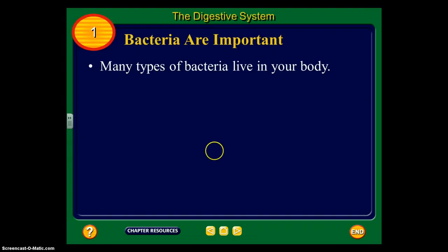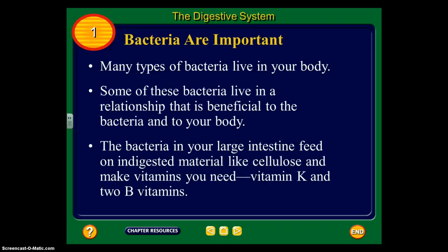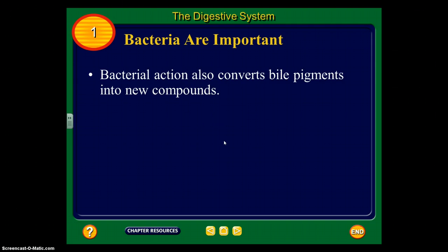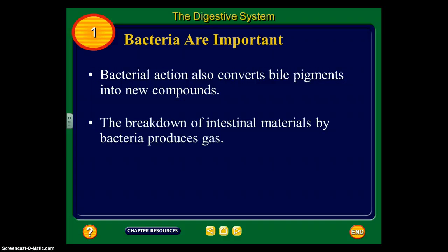Last but not least, there are many types of bacteria that live in our digestive system. Some live in a relationship that is beneficial to both the bacteria and our bodies. Bacteria in our large intestine feed on undigested material like cellulose and make vitamins we need, such as vitamin K and two different B vitamins. Bacterial action also converts bile pigments into new compounds, and the breakdown of intestinal materials by bacteria produces gas.